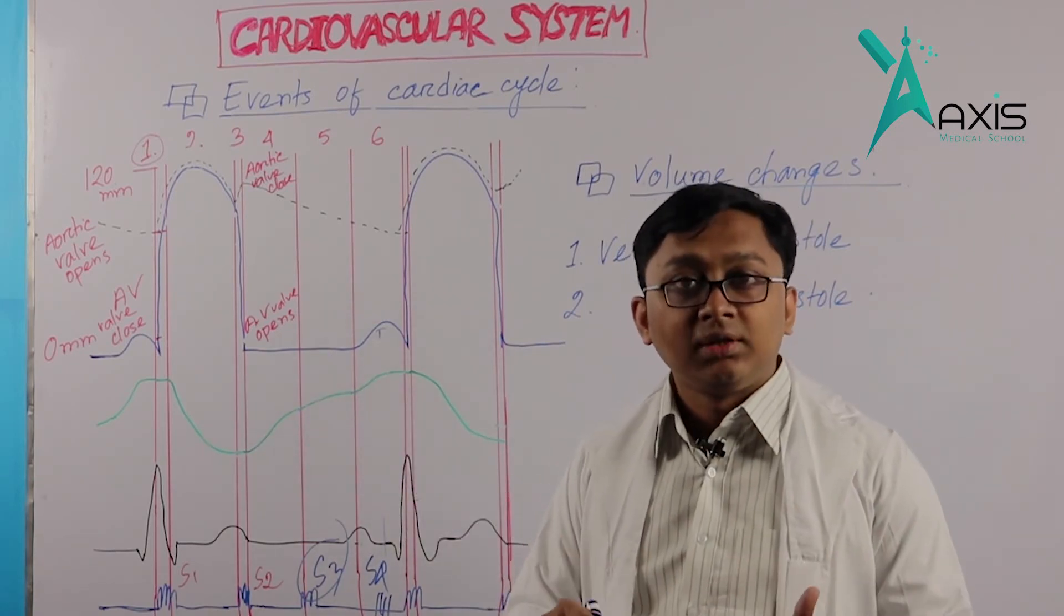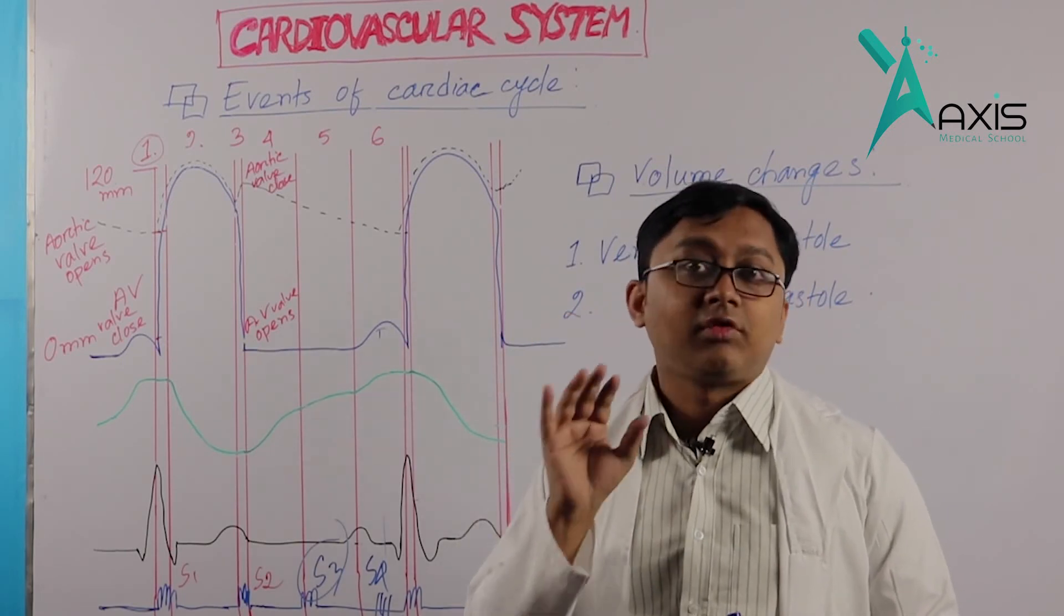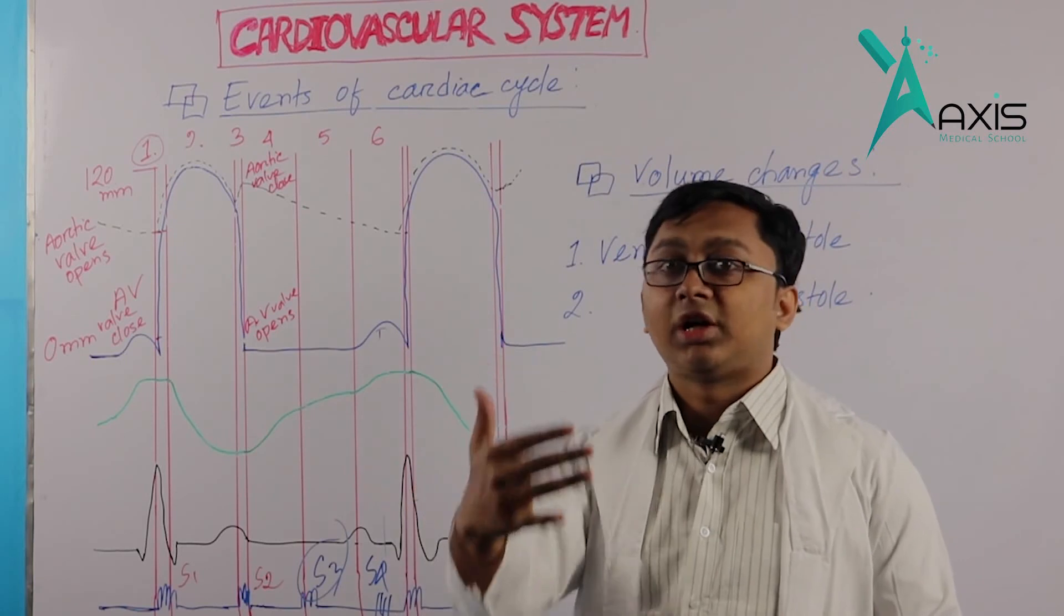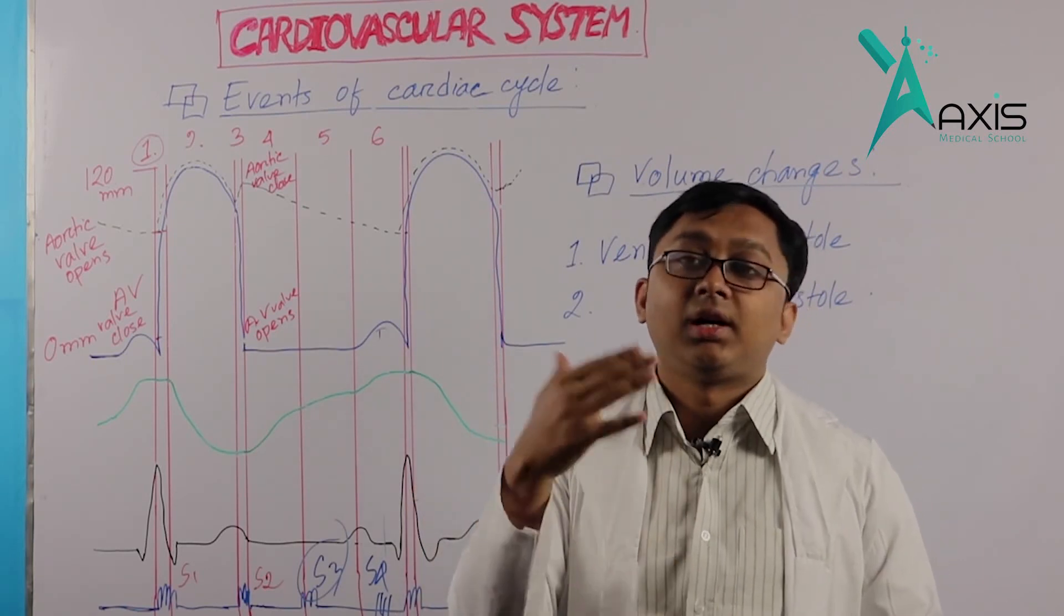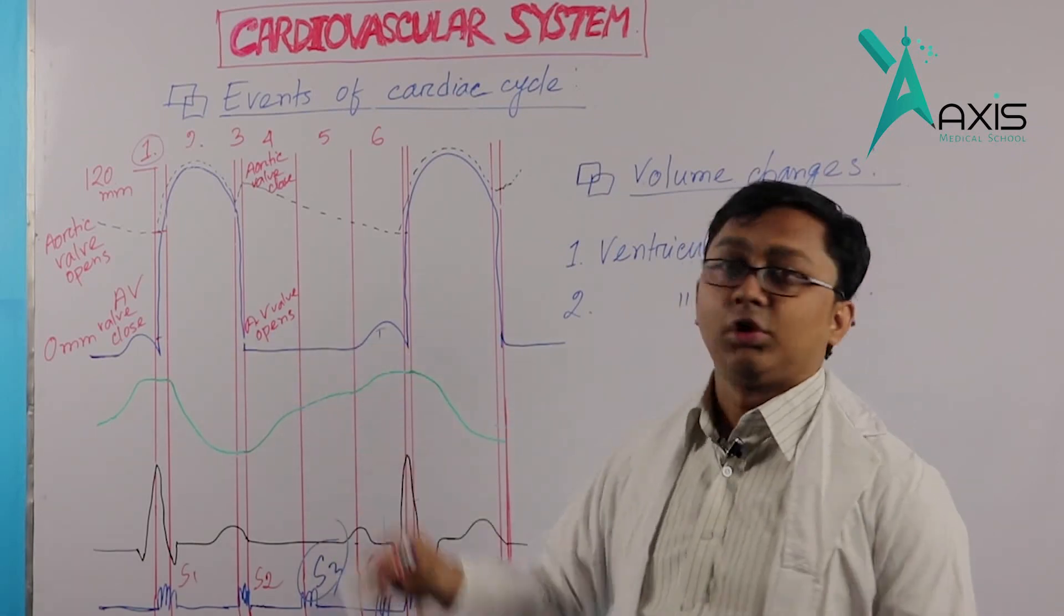Then comes the slow filling phase, diastasis. Then the last rapid filling phase occurs, because there is continuous blood flow from the atrium to the ventricle.